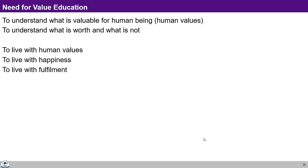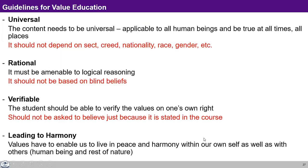With this need, when we try to implement and work on value education, how do we go about it? There are certain guidelines that we have been trying to work out. These are four guidelines — there can be more, but these four seem to be very essential and also very effective. Number one: it has to be universal. Number two: it has to be rational. Number three: it has to be verifiable. Number four: it has to lead to harmony and not oppositions or contradictions.